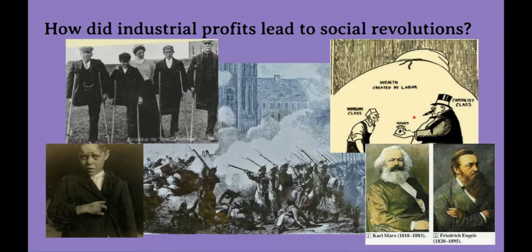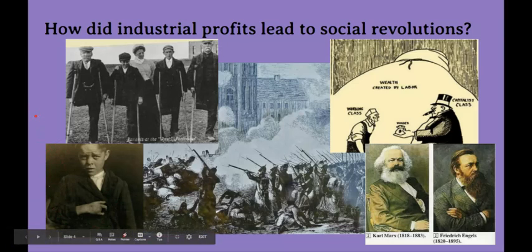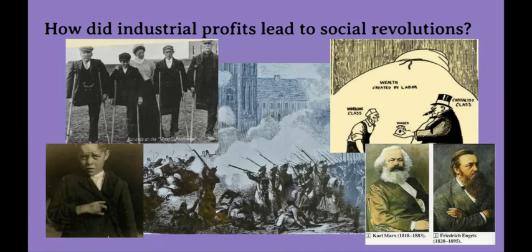Question number two: how did industrial profits lead to social revolutions? Workers in industrial factories were trapped in a system of repetitive wage labor. These men might literally find themselves trapped in a collapsed coal mine. This child found himself trapped in a machine, his hand injured in the process. Industrial jobs were dangerous, boring, physically demanding, and paid low wages. Workers had few choices and fewer opportunities for change. An injury in this system would mean poverty for life — workers felt at the mercy of their employers.